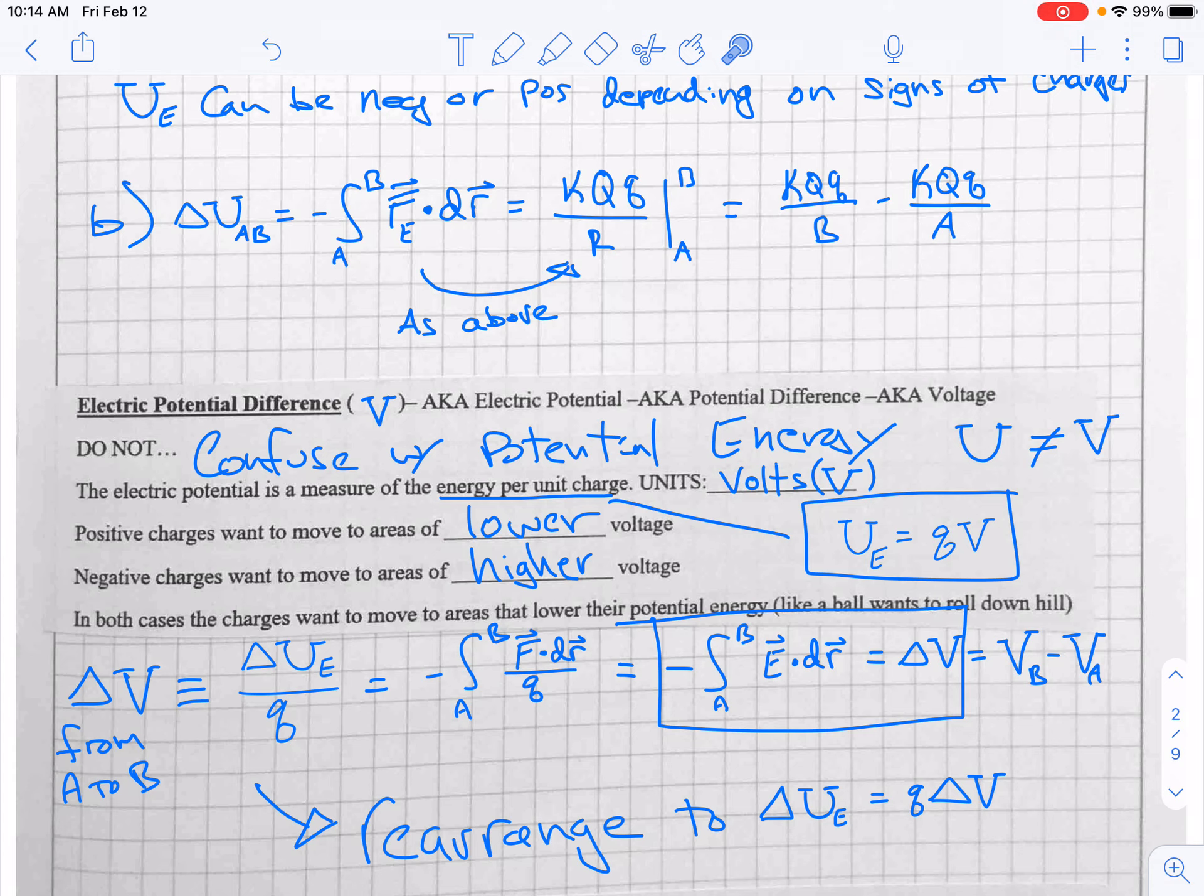The positive charges are going to want to move to areas of lower voltage, just like gravity wants to pull a mass down to a lower height. But a negative charge wants to go to an area of higher voltage. And you can think of that as like a balloon, a helium balloon wanting to go to an area of higher elevation. So a positive charge would be like a mass that wants to fall down under the influence of gravity with the gravitational field. Positive was defined to be the direction the electric field goes with a positive charge. So a negative charge is going to go in the opposite direction of the electric field, and that's going to move it to an area of higher voltage.